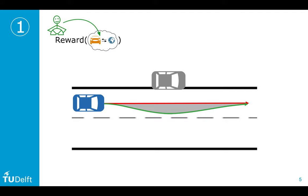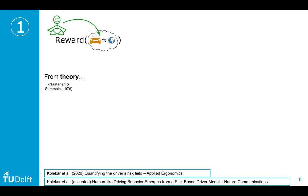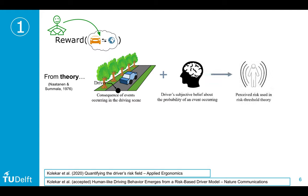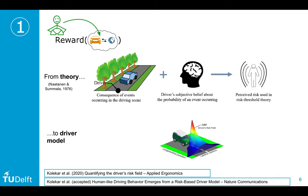To mitigate these misalignments, we need to understand the underlying mechanisms of driver preferences. We started with a long-standing theory in human factors by Natan and Sumala, which describes how drivers perceive risk: drivers consider the consequences of events in a driving scene and their belief about the probability of an event occurring, resulting in a perceived subjective risk. We captured this into a computational model — without AI — which models the driver's belief as a driver risk field. This has just been published in Applied Ergonomics as open access.